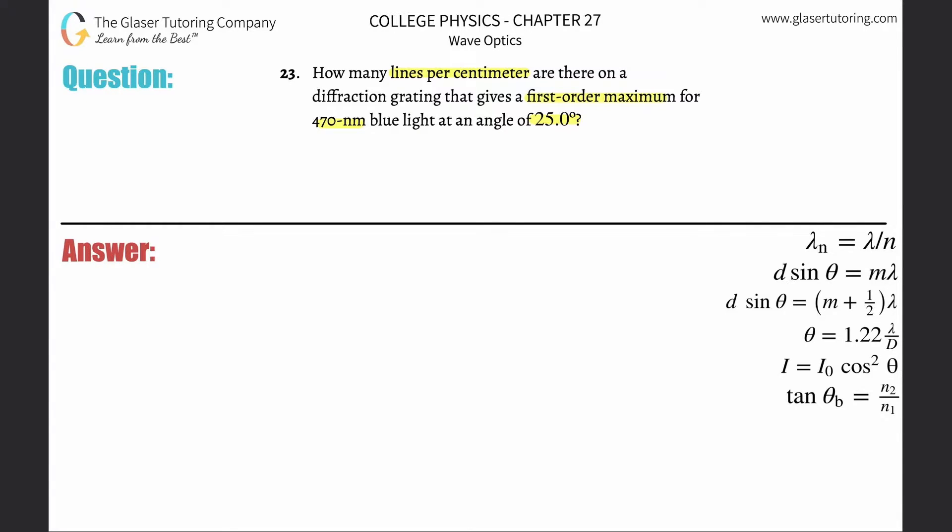Given the information, it sounds like I can calculate the distance between the slits. This is constructive interference, so I'm using the constructive formula. The distance between the slits d equals m times λ divided by sin θ, where m is the order and λ is the wavelength.